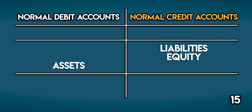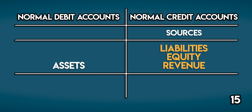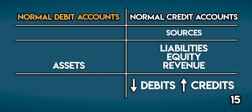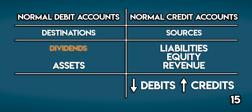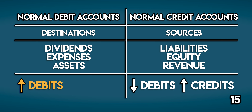Normal credit accounts represent the sources that economic benefit flows from — these are liabilities, equity, and revenue. When we credit these accounts, they increase in value, and when we debit them, they decrease. Normal debit accounts work the other way around; they represent the destinations economic benefit flows to: dividends, expenses, and assets. These increase when debited and decrease when credited.